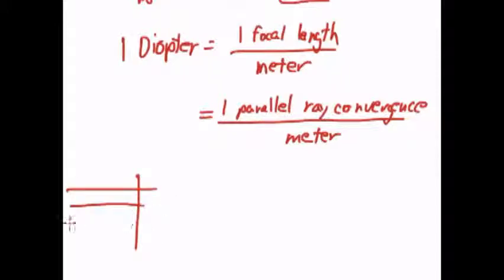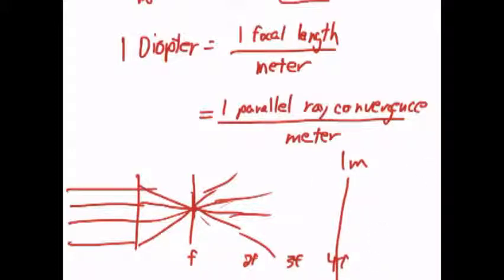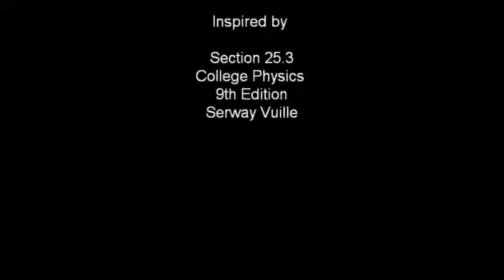Once you have a parallel ray convergence at a distance of f, you can't have more parallel ray convergences. If you have a whole meter, you don't get multiple parallel ray convergences. You just have one parallel ray convergence. But you might have several focal lengths, 2f, 3f, 4f, at one meter. This one would have power equals four diopters, because there are four focal lengths per meter.